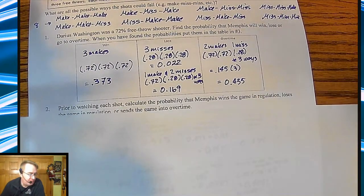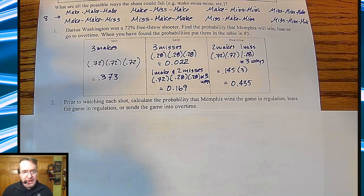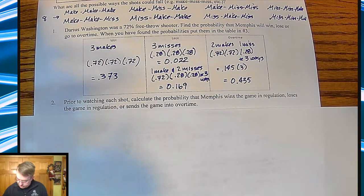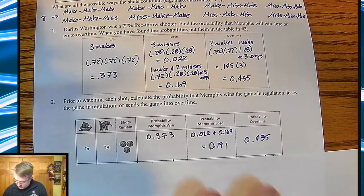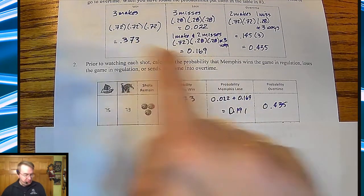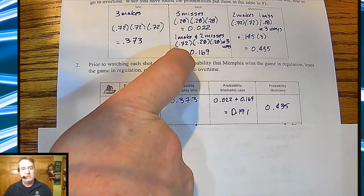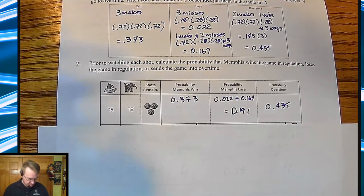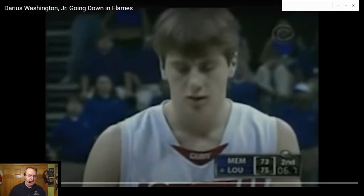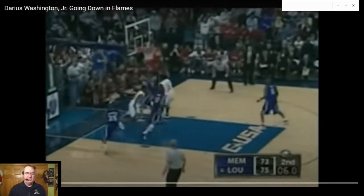Now we're going to watch what actually happened, since most of you were probably not even born then — or at least not watching the Conference USA game. We'll go through shot by shot and track the probability of Memphis winning. There's 6.7 seconds left. Louisville is on the line, shoots a free throw — and they miss. Memphis gets the ball back with three seconds left. Washington goes up and gets fouled.